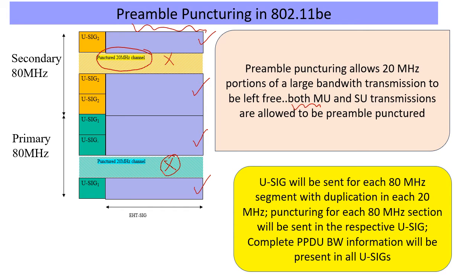But in 11BE or Wi-Fi 7 we have MU and SU both being allowed, and especially since SU transmissions are dominant, the fact that preamble puncturing is allowed with SU is a likely positive feature from the perspective of adoption. There is physical layer signaling along with the PPDU which will indicate which 20 megahertz sections are preamble punctured, and there is a lot of flexibility in opting for what sections to be punctured.